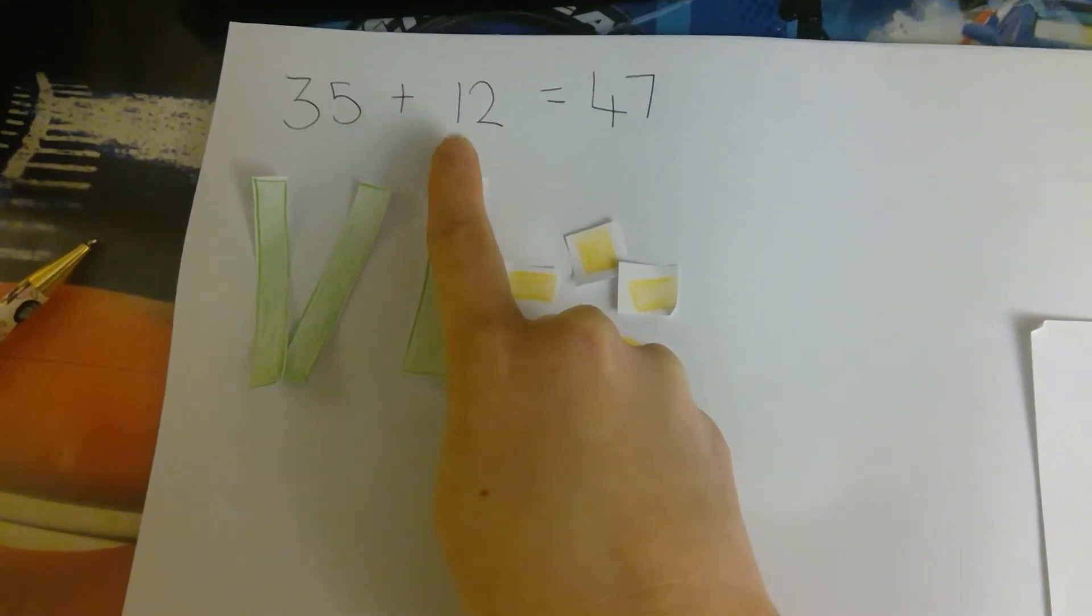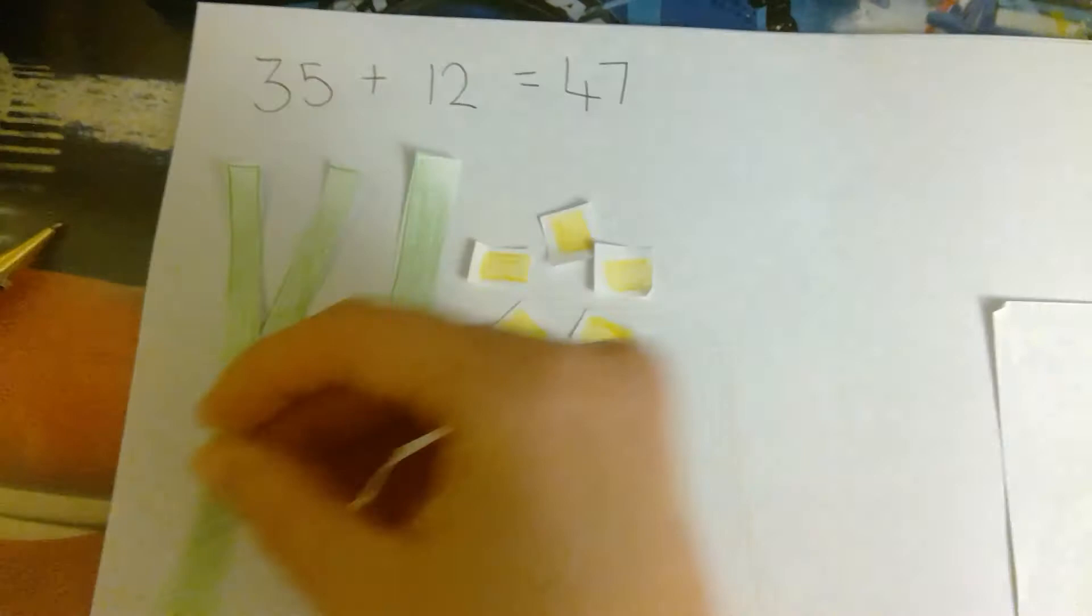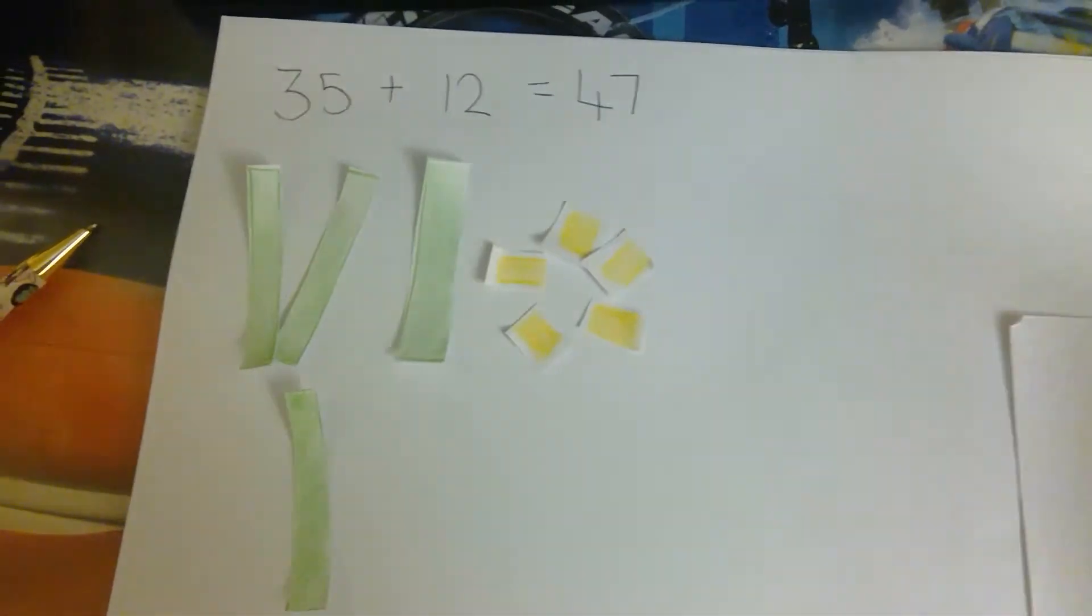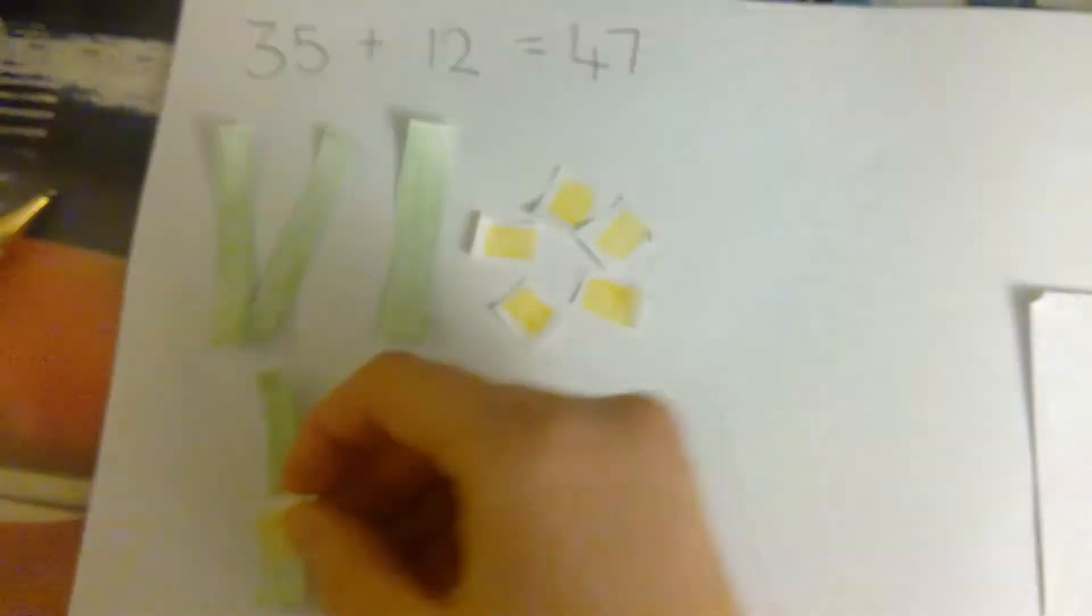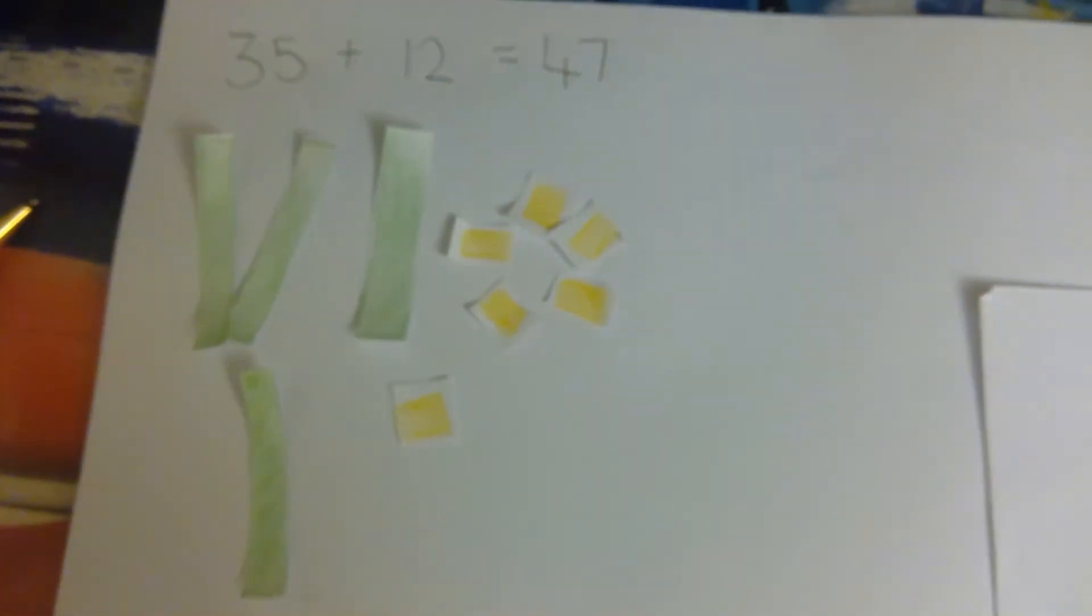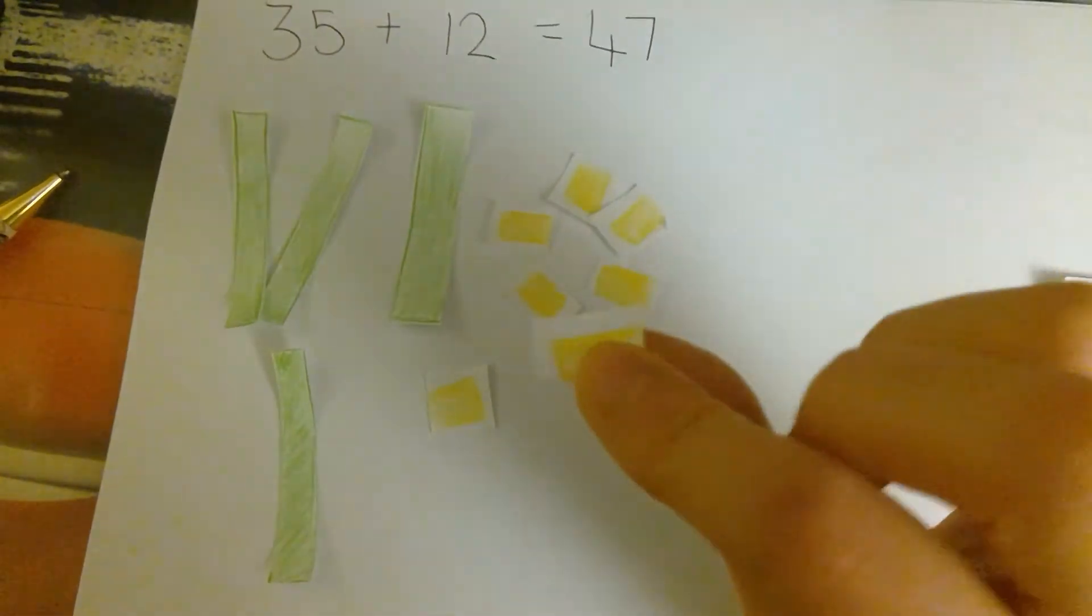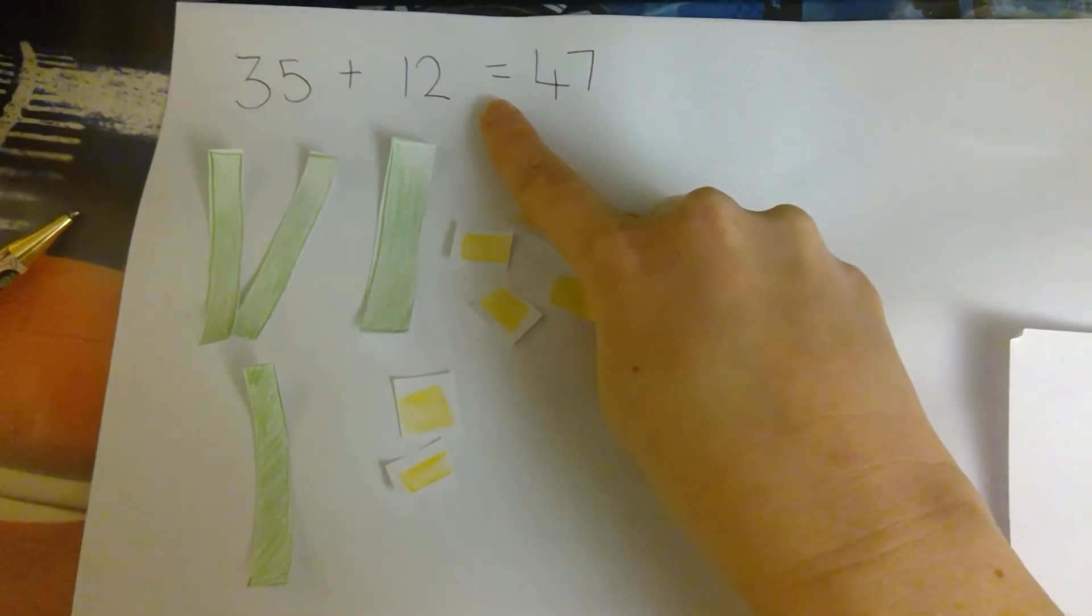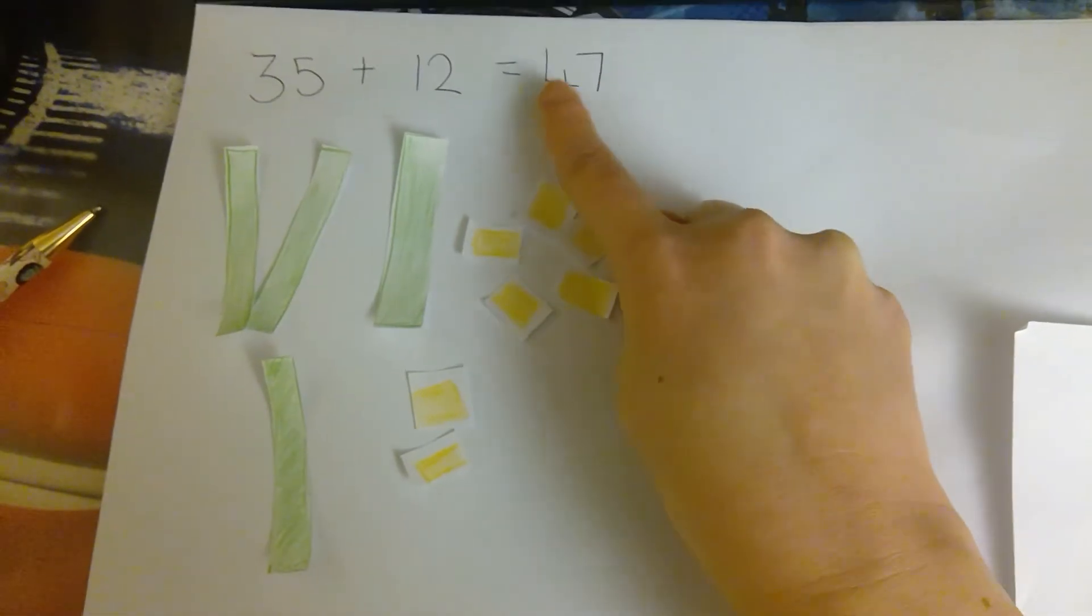Add one 10 and two ones. 1, 2, all together that's the same as 47. Let's check.